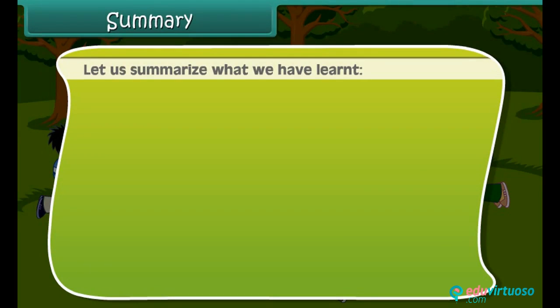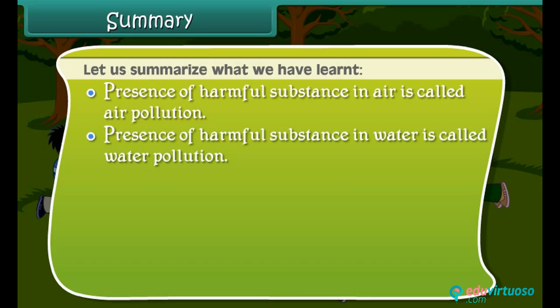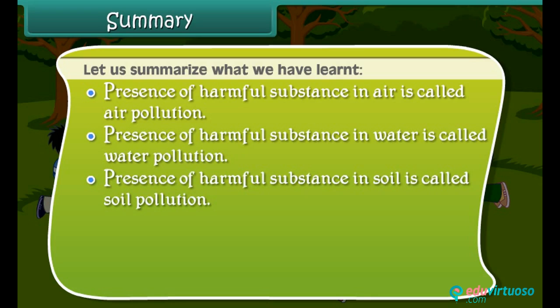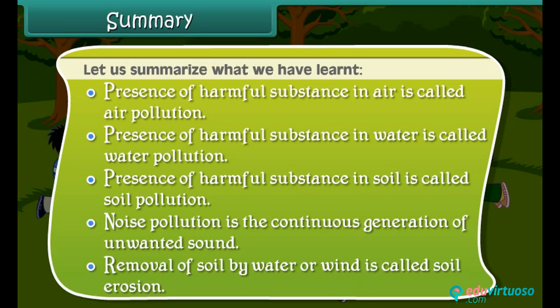Let us summarize what we have learned. Presence of harmful substances in air is called air pollution. Presence of harmful substances in water is called water pollution. Presence of harmful substances in soil is called soil pollution. Noise pollution is the continuous generation of unwanted sound. Removal of soil by water or wind is called soil erosion.